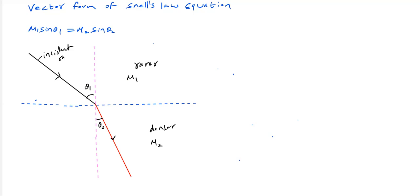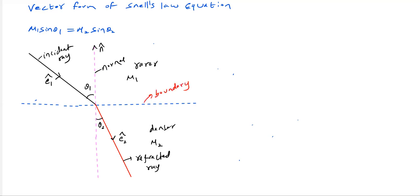Here we'll define: this is the incident ray, and the unit vector directed along the incident ray, let me call it Ê₁. The unit vector directed along the refracted ray, let it be Ê₂. And let the unit vector directed along the normal be n̂. θ₁ and θ₂ are the angle of incidence and angle of refraction.